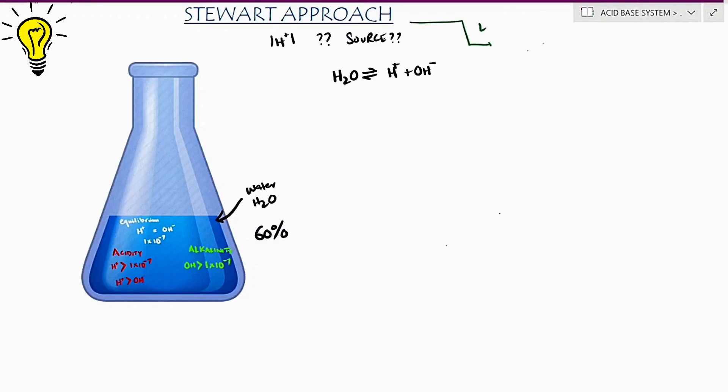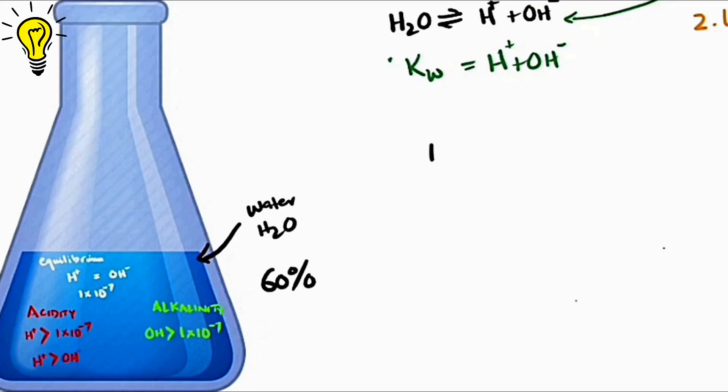Now any solution in which hydrogen ions exceed this balance is acidic and any solution in which hydroxyl ion exceeds this balance is basic. Under the law of dissociation equilibrium, the sum of hydrogen and hydroxyl ions within water must remain at 1×10^-14 or constant. It should remain constant. So if hydrogen ions increase in water, a concomitant decrease in hydroxyl ion occurs and vice versa. So the net sum remains constant.